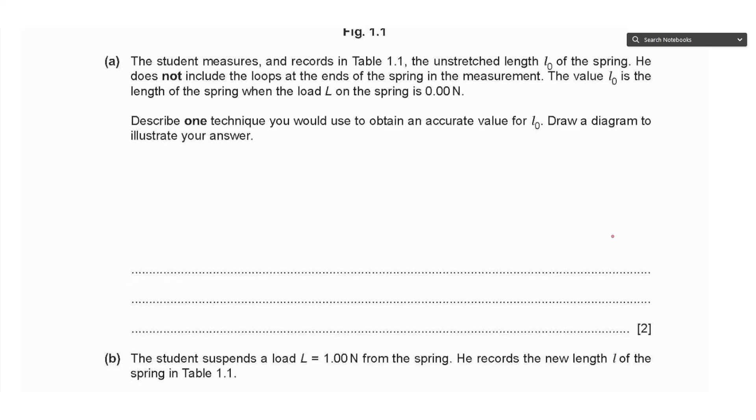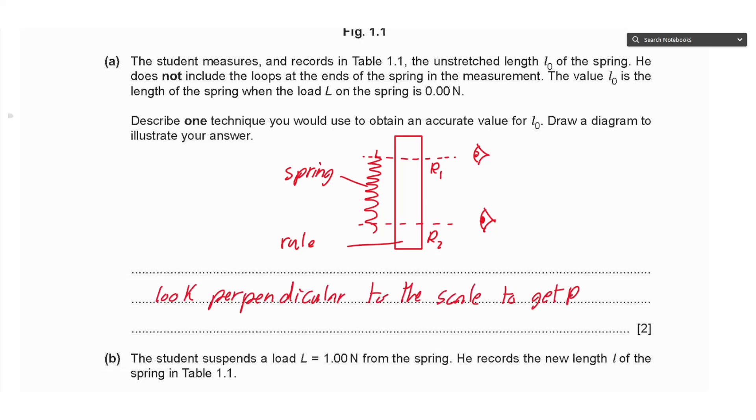Describe one technique you would use to obtain an accurate value for L₀. Draw a diagram to illustrate your answer. So we can draw the spring like this as zigzag lines and the ruler next to it as a rectangle. Now we can say that we will take two readings at the top and bottom of the spring, looking perpendicular to the scale at 90 degrees. We have reading 1 and reading 2. We must label the diagram and say look perpendicular to the scale to get R₁ and R₂, then calculate L₀ equals R₁ minus R₂, according to which way the zero of the meter rule is pointing.